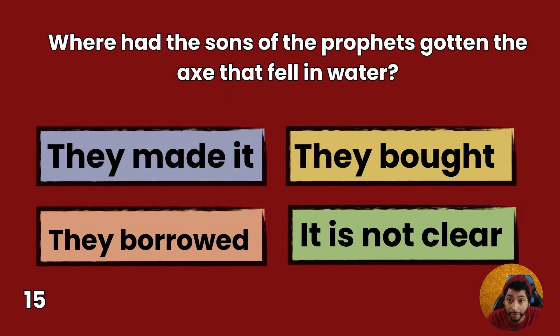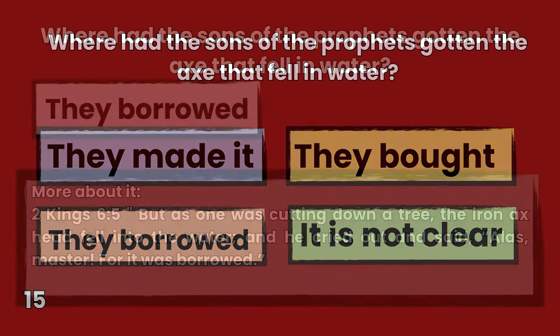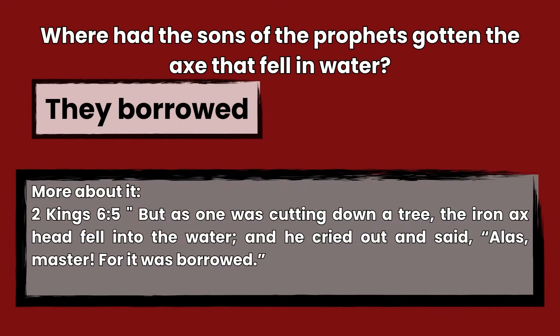Question 15: Where had the sons of the prophets gotten the axe that fell in the water? They made it, they bought it, or they borrowed it? Answer: They borrowed it. 2 Kings 6:5 — But, as one was cutting down a tree, the iron axe head fell into the water, and he cried out and said, Alas, master, for it was borrowed.